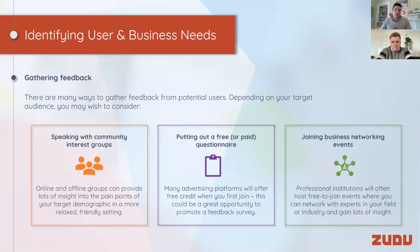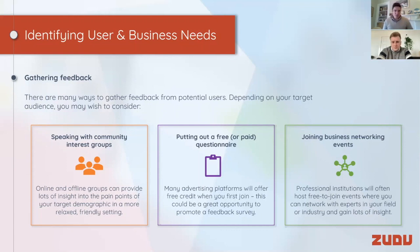It's really important to identify your user and also business needs. A key part of any app development process really is speaking to the key stakeholders of the system and making sure that what you're building is right for them. We always recommend — we have app development questionnaires — and we work with organisations like the NHS as well to do community interest groups and focus groups across lots of different demographics.